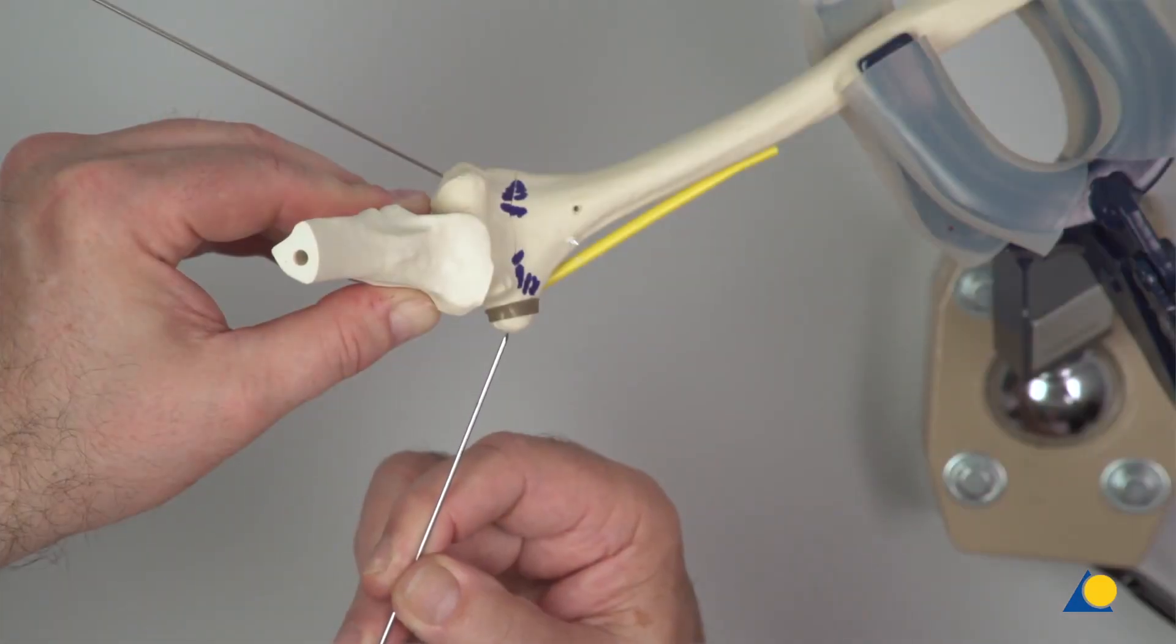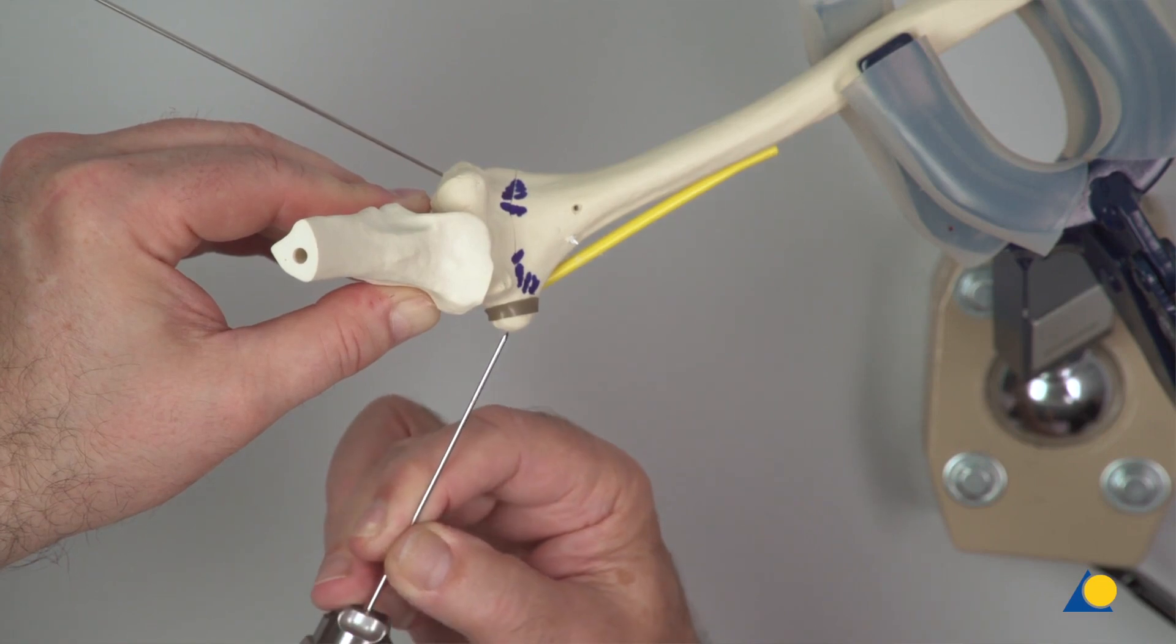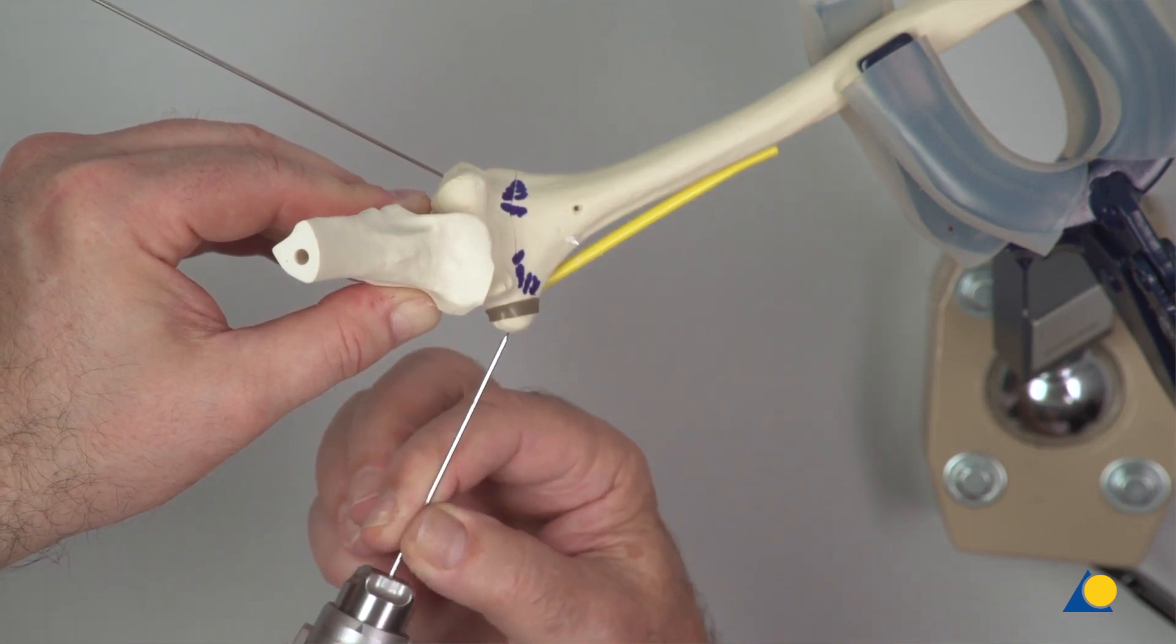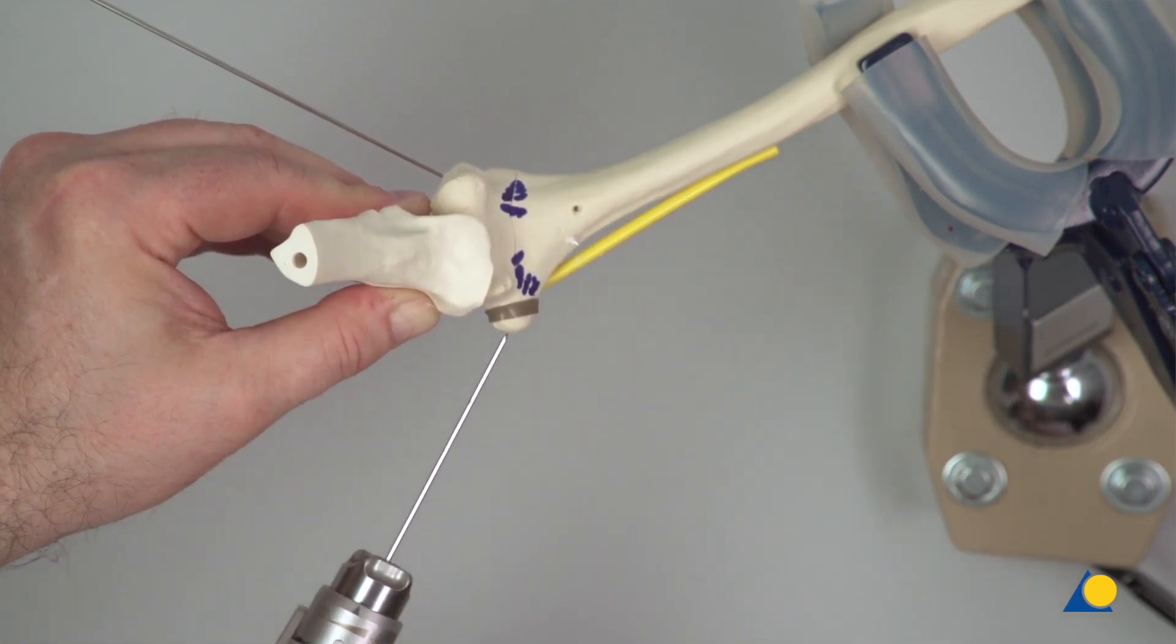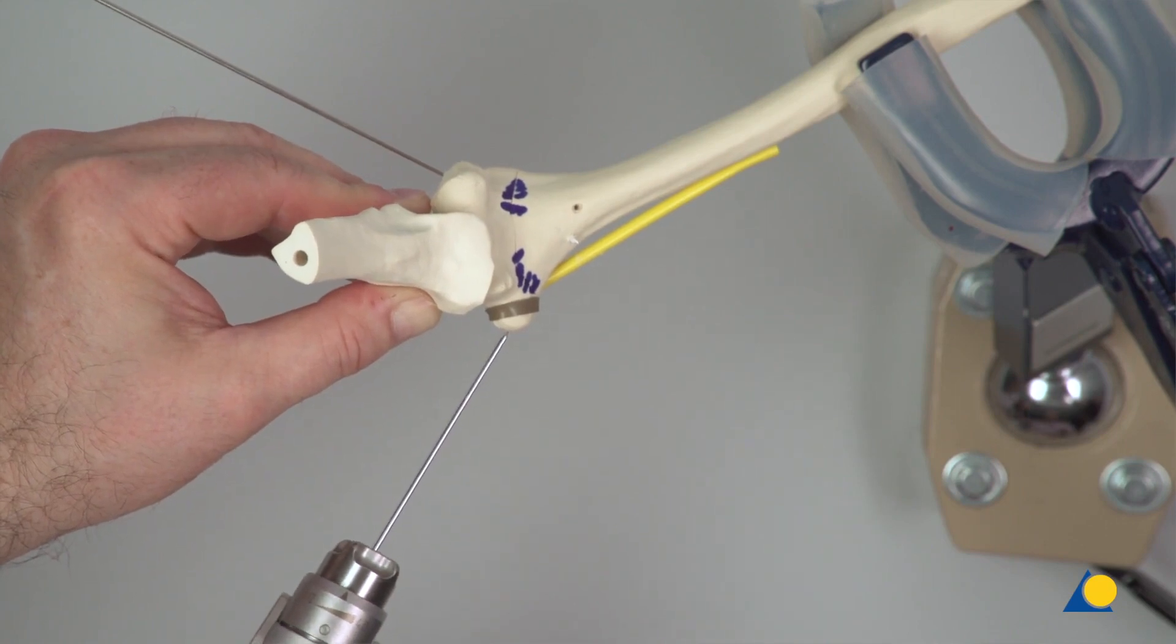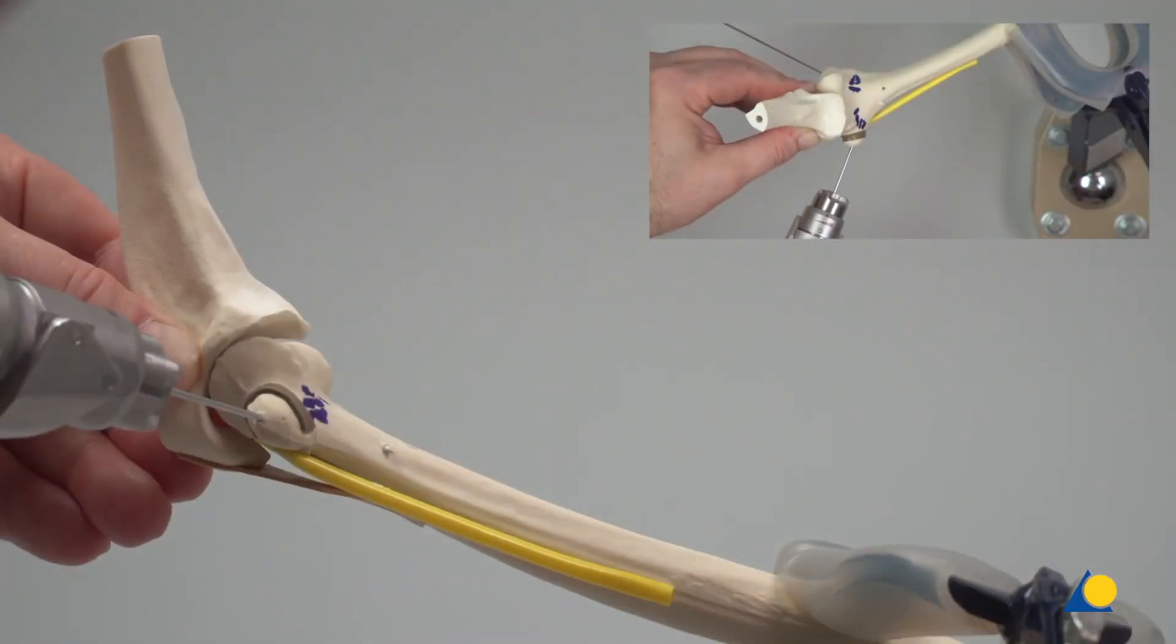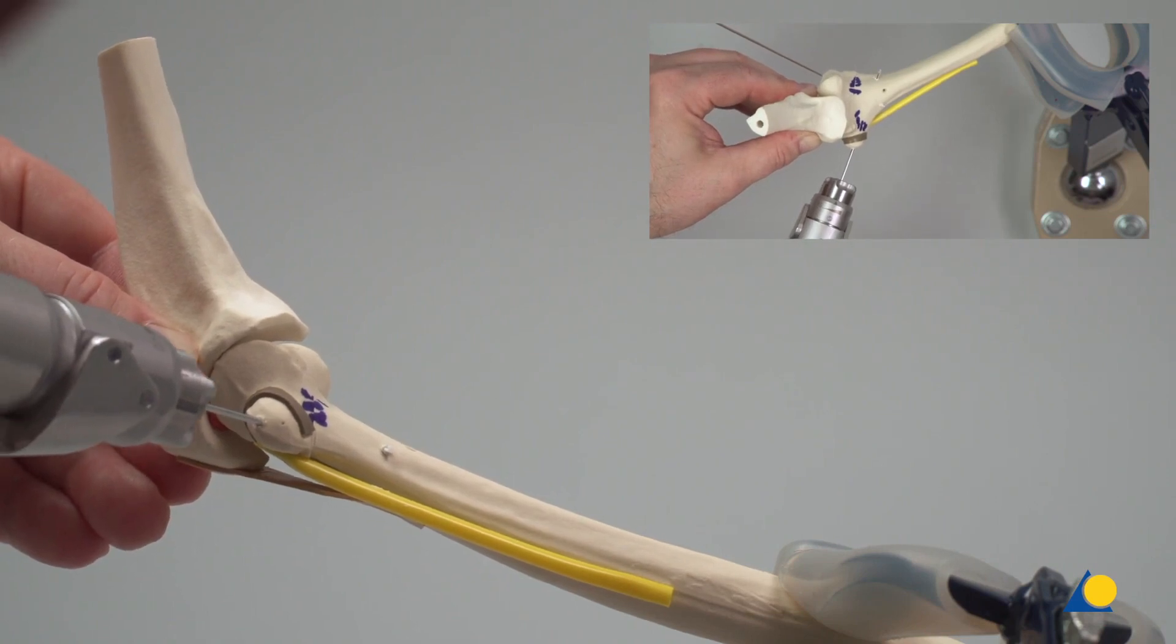Clinically, the elbow would be in a more extended position in order to relax the ulnar nerve and prevent nerve injury. It can be seen as the path of the K-wire is towards the axis, there is no danger of injury to the ulnar nerve.